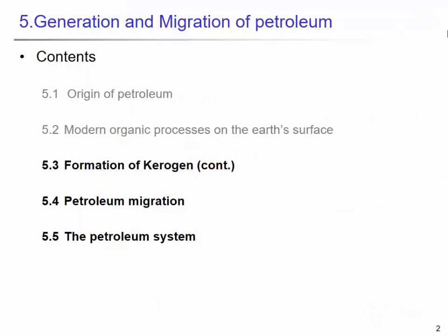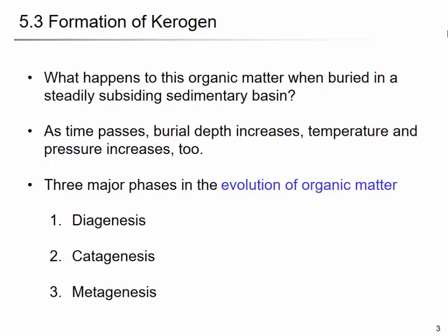Today we will continue from the last class talking about the formation of kerogen. Kerogen is a transitional material from organic matter to petroleum. When you have organic matter in sediment, it will be transformed to kerogen, and when the temperature and pressure is right, this kerogen will give up the petroleum — the oil and gas.